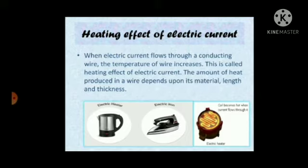The amount of heat produced in a wire depends on the material, length, and thickness of the wire. Some examples that work on the heating effect of electric current are electric heater and electric iron. When these appliances are connected to the electric supply, the elements inside them become red hot and start emitting heat.